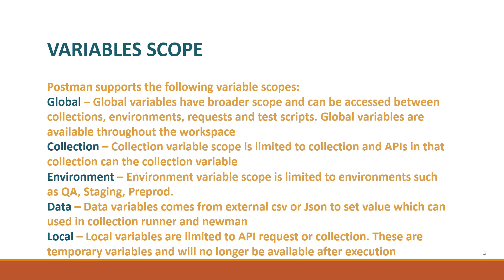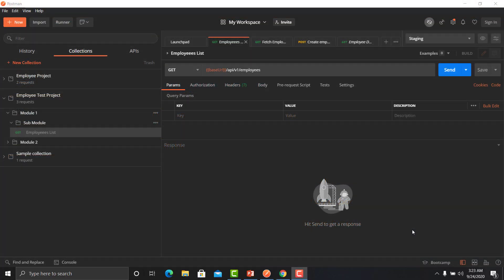Environment variables are limited to specific environments such as QA, staging, and pre-prod, helping you switch between environments when running your APIs. Data variables come from external files such as CSV or JSON and are used in the Collection Runner. Local variables are defined at the request level and are temporary — once your request has executed, they are no longer available in Postman.